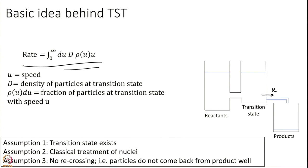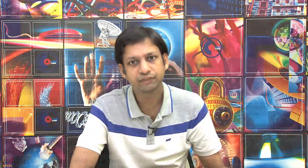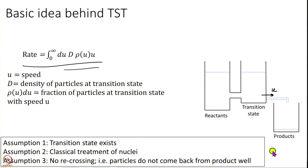Now we make things more mathematical and concrete. In writing this rate expression I have made three assumptions. First, the transition state exists — there are reactions for which it does not, but we only consider those where it does. Second, we use a classical treatment, thinking of particles moving with speed u, which is a Newtonian notion. Third, we integrate only over positive speeds, from 0 to infinity — meaning once a particle crosses the transition state to product, it does not come back.